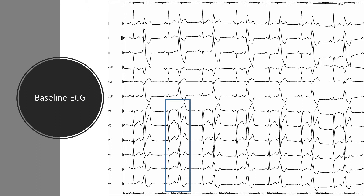Here is the baseline ECG of the patient. The PVC has left bundle branch block pattern with late transition, which suggests an origin from right outflow tract. The positive lead 1 suggests that the origin is on the right side of the midline, which is the posterior outflow tract, and notching means that most probably this PVC originates from the free wall of the right outflow tract.